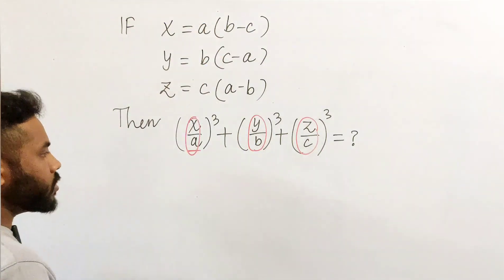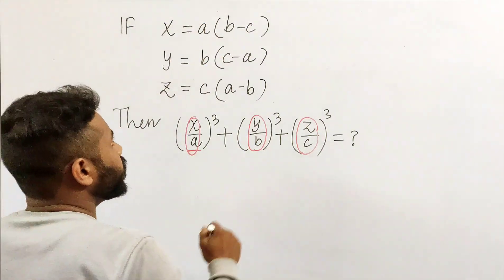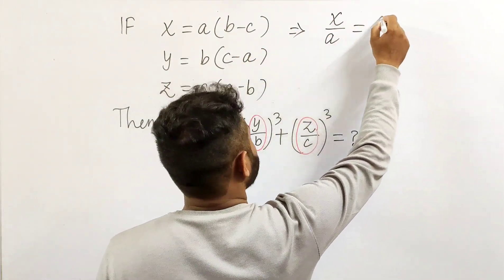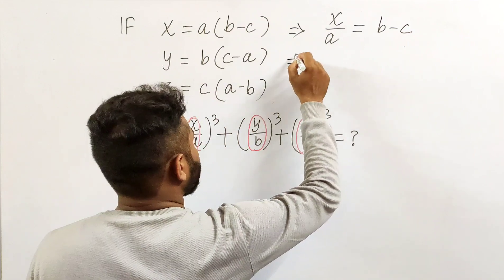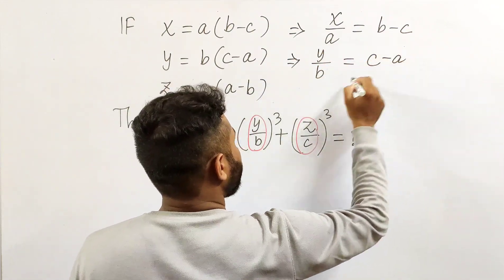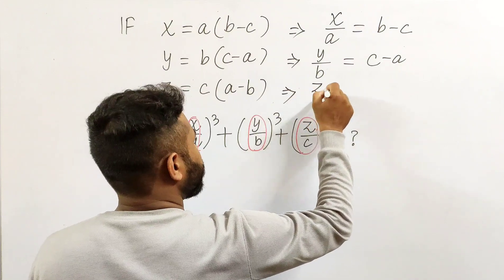All we need to do is just replace: x by a will be b minus c, y by b will be c minus a, and z by c will be a minus b.